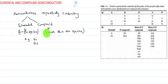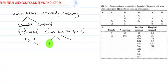Similarly, in germanium, only germanium atoms will be present. Silicon and germanium are the main examples of elemental semiconductors. Silicon is the most commonly used semiconductor compared to germanium due to its greater availability and stability.